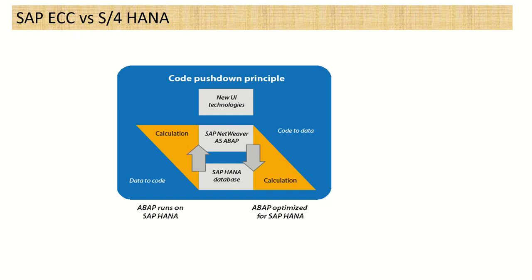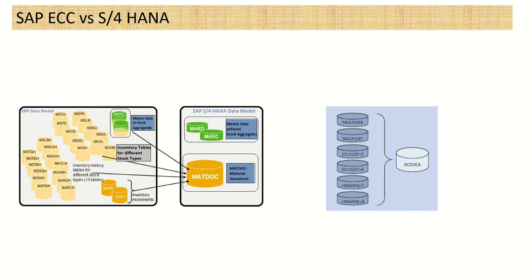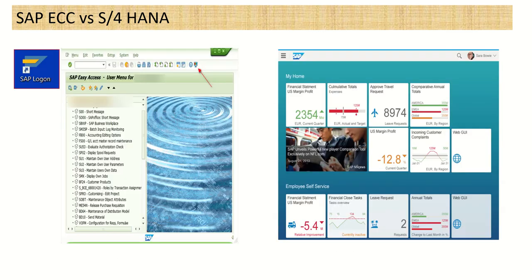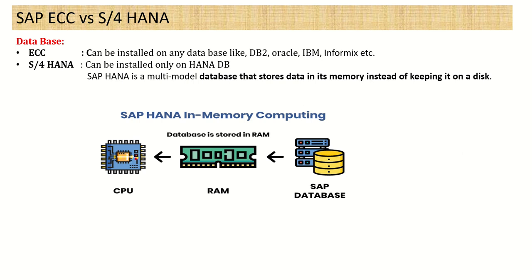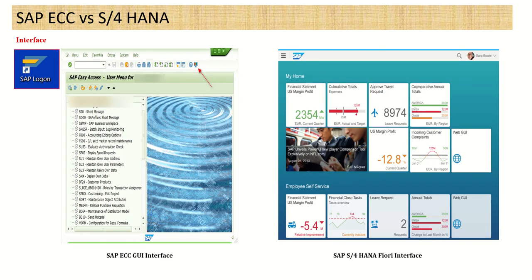Those are the major differences between ECC and S4 HANA. The two most significant are: first, the database — HANA DB — and second, the GUI interface — the Fiori application. With this, I am closing this session. Thank you.